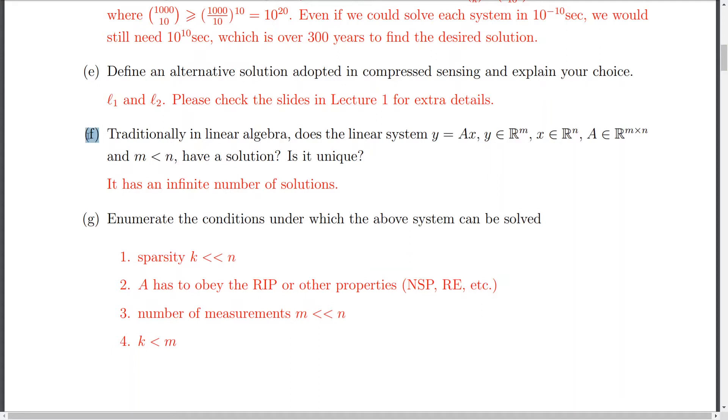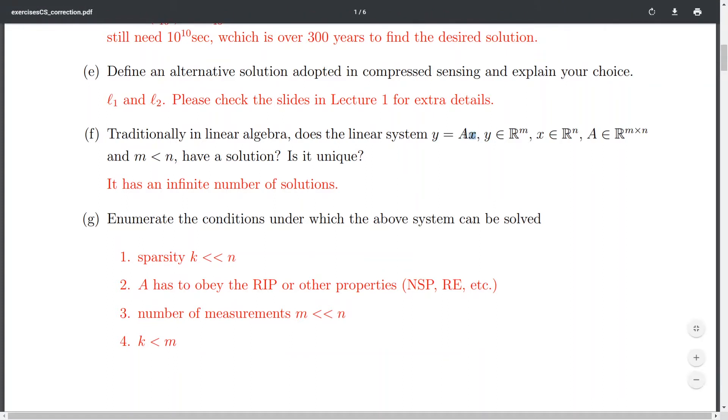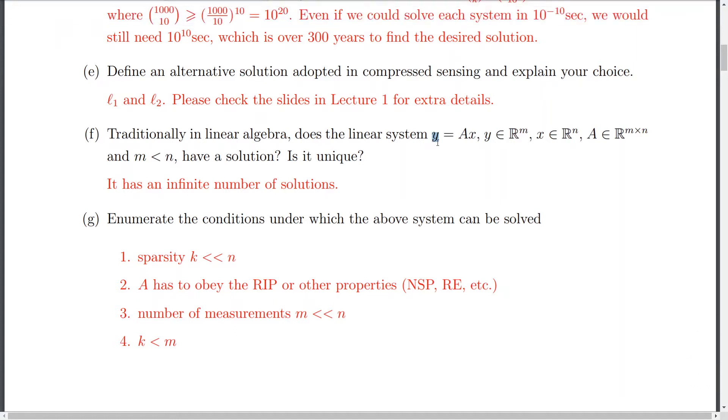So next, we know that traditionally in linear algebra and linear system of equation where Y actually or the number of equations are actually lower than the unknowns themselves. So does this system of equation have a solution? Yeah, it has a solution, but the solution is not unique. I can actually find an infinite number of solutions. And that, of course, doesn't solve the issue. We're kind of like still stuck if we look at this problem from a linear algebra point of view.